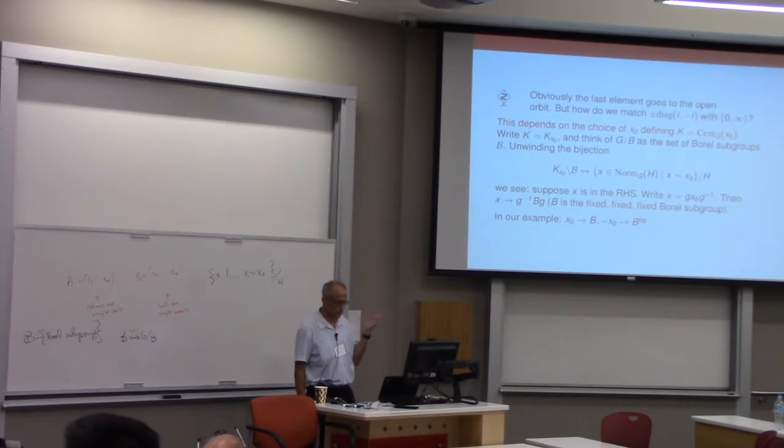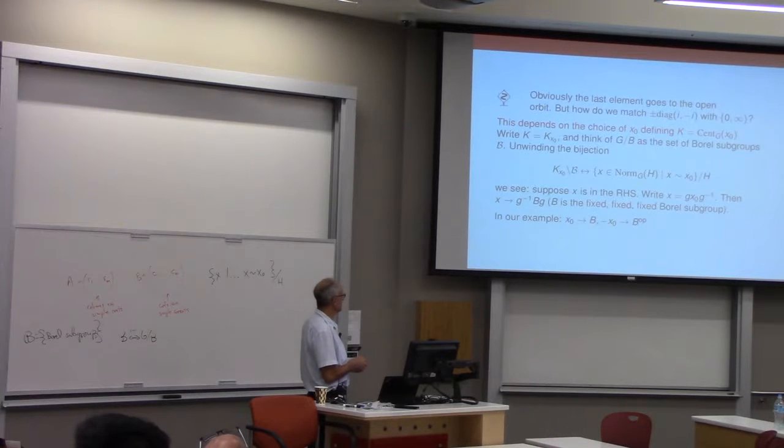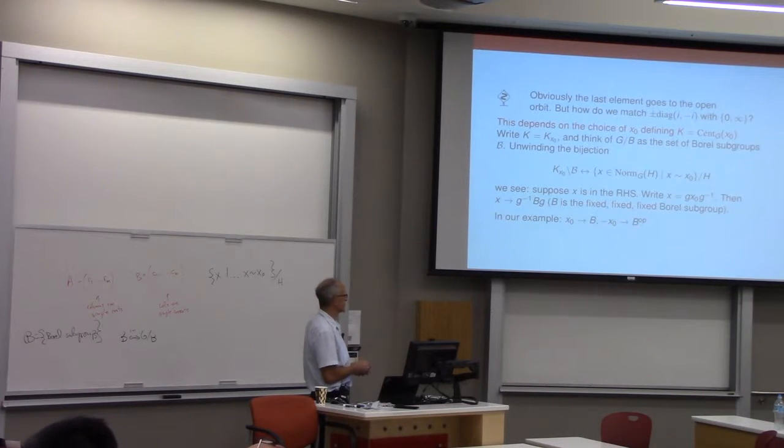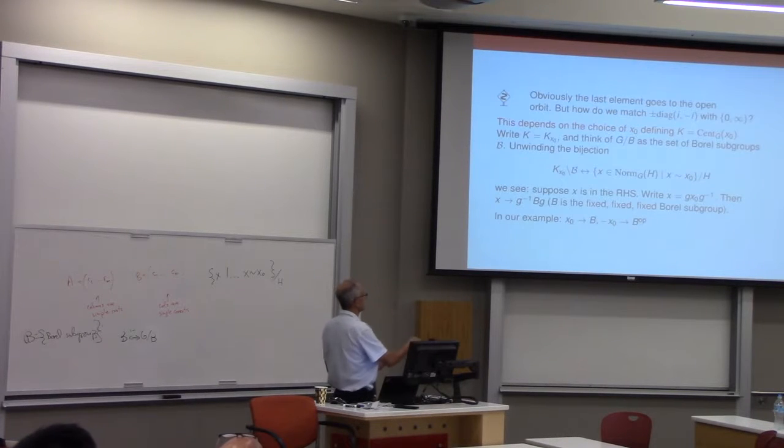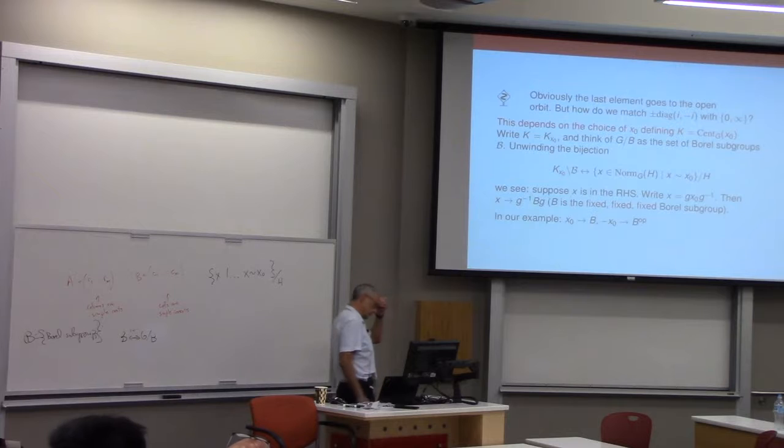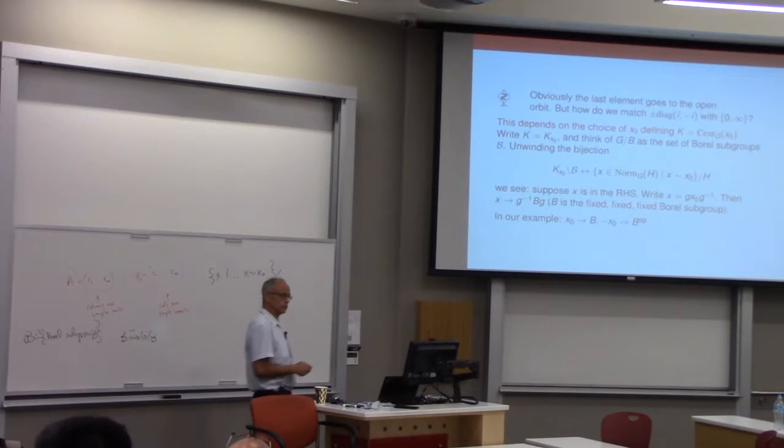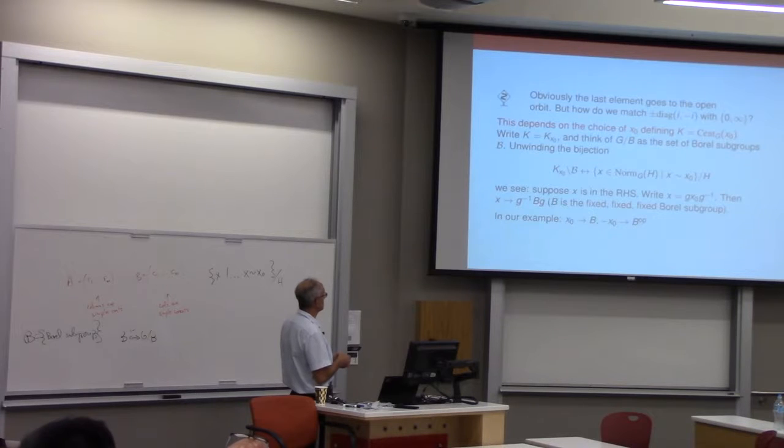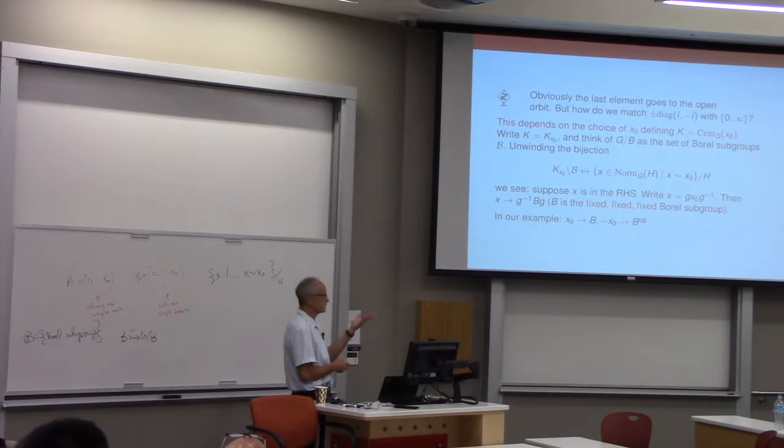The way we've chosen things, X-naught is going to B, because that's where this element G is 1. Minus X-naught, how do you conjugate X-naught to minus X-naught? That's the element of the Borel group which changes B to its opposite. So X-naught goes to B, minus X-naught goes to B opposite, and then the third one goes to the open orbit.